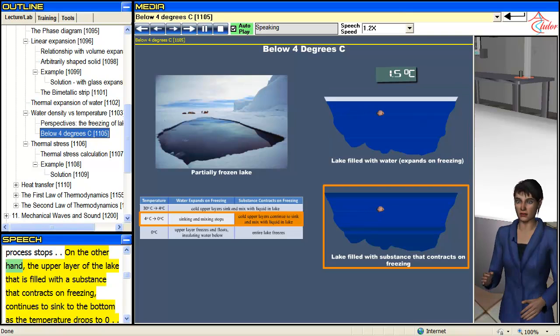On the other hand, the upper layer of the lake that is filled with a substance that contracts on freezing continues to sink to the bottom as the temperature drops to 0.